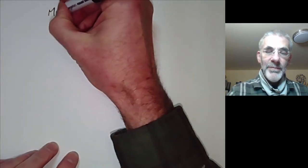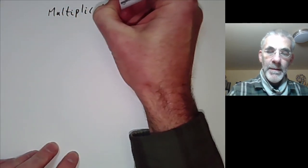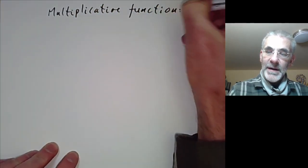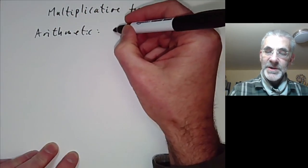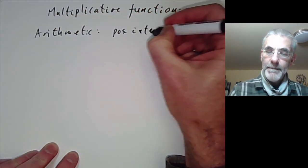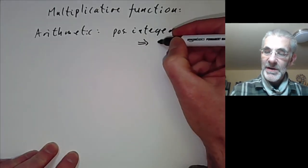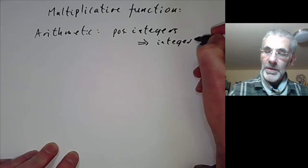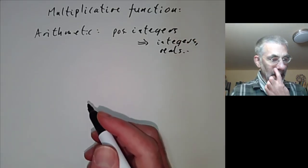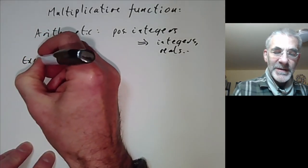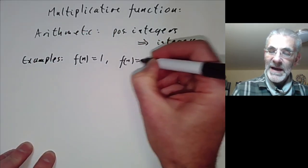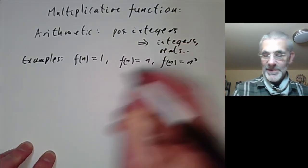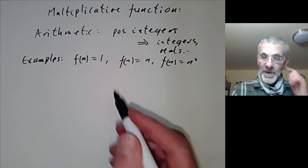This lecture is part of an online course on the theory of numbers and will be about multiplicative functions. A multiplicative function is a special case of an arithmetic function. An arithmetic function is just a function from positive integers to something — usually integers, reals, or something else. Some examples include polynomials like f(n) = 1, f(n) = n, or f(n) = n squared, though these aren't really interesting and don't have much to do with number theory.